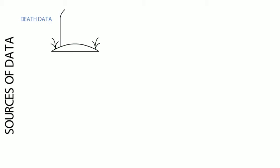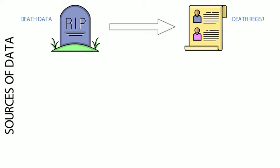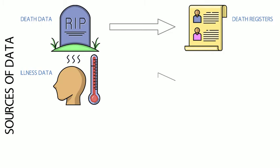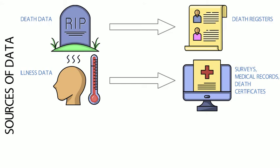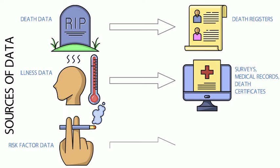How do health authorities go about collecting data to answer these questions? The methods used differ depending on the question, but in general, death data is typically collected from official death registers kept by national authorities, or sometimes by hospitals. Illness data, also known as morbidity data, is collected through surveys, review of medical or hospital records, or from information written on the death certificate. Data about risk factors is usually collected through implementation of representative community-wide population health surveys.